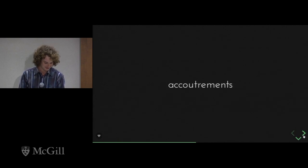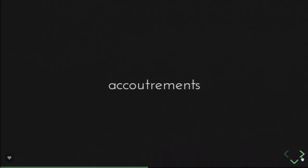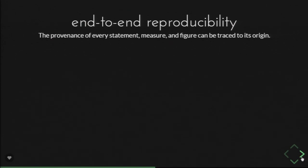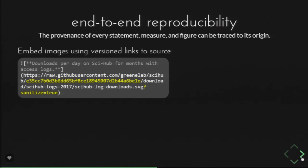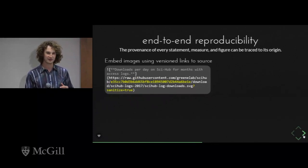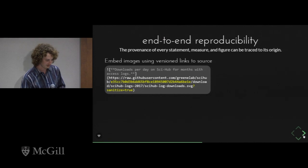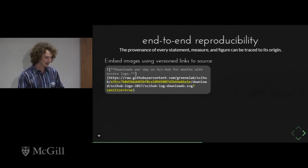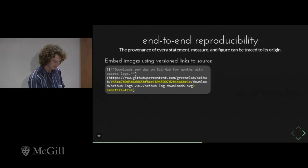Here are some aspects I find important about Manubot. One is end-to-end reproducibility — the concept that the provenance of every statement, measure, and figure can be traced back to its origin in a paper. We recommend that when users embed figures, they use versioned links to the source repository that created that figure. For example, this Markdown to embed an SVG image links to the GitHub repository that created it using a commit hash, so there's no ambiguity about where that figure came from or what computational process created it.